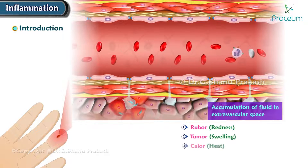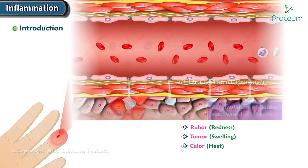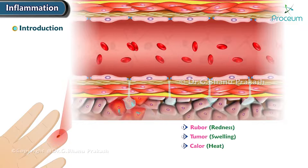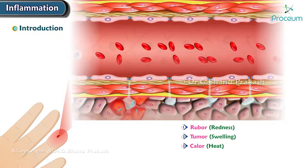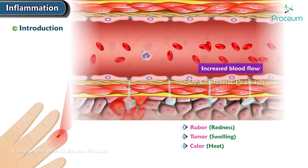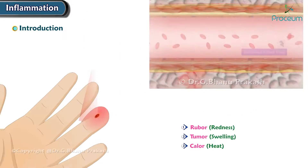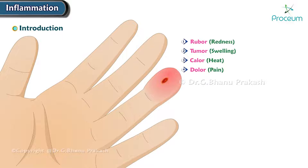The third is calor, or heat — this is due to the increased blood flow. The fourth is dolor, or pain — this is due to mediators such as bradykinin.